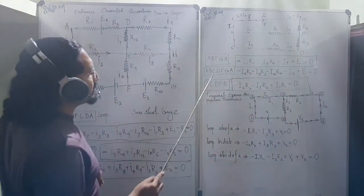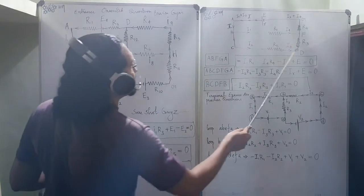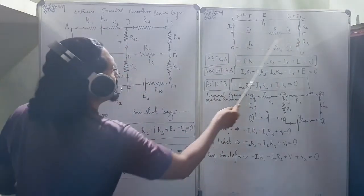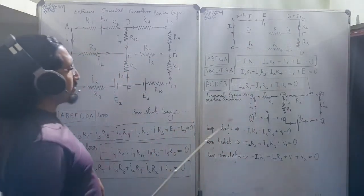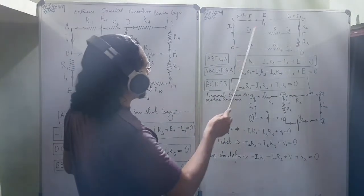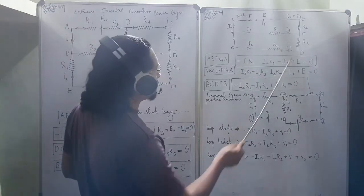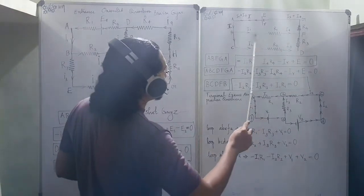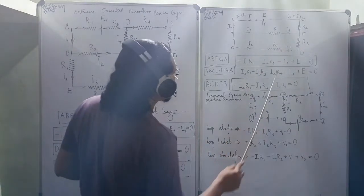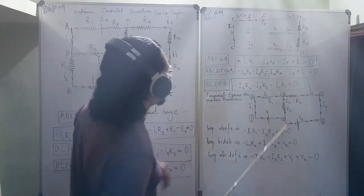And next default mesh is B-C-D-F-B. B-C-D-F-B. This section which does not contain any cell. So, taking the same anticlockwise direction to be minus I2*R2. Minus I3*R3. But against these two things, I1 comes down. So, plus I1*R1 is equal to 0.